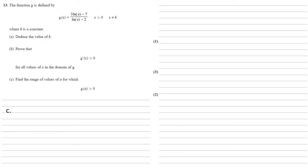For part (c), we need to find the range of values of a for which g(a) > 0. So g(a) > 0 means (3 ln a − 7) / (ln a − 2) > 0.